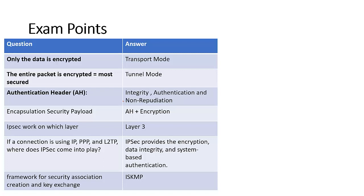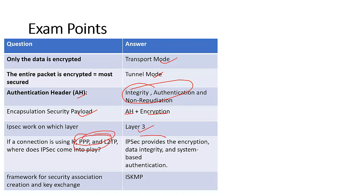Exam summary points: If the question says only data is encrypted, the answer is transport mode. If it says the entire packet is encrypted, the answer is tunnel mode — tunnel mode is the most secure. If the question talks about integrity, authentication, and non-repudiation, the answer is AH. If it talks about ESP, it offers AH plus encryption. IPSec works on layer 3. If the connection setting uses L2TP or PPTP, IPSec provides encryption, data integrity, and system-based authentication in those protocols — they are dialer protocols, and IPSec provides the security layer.